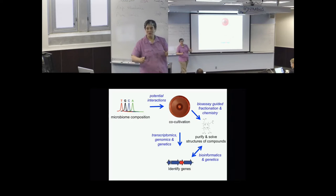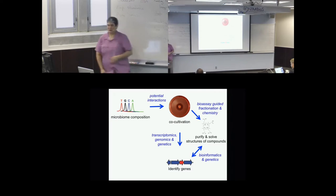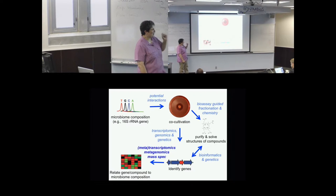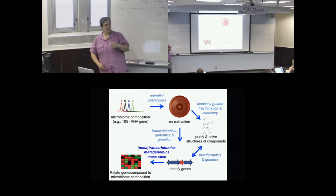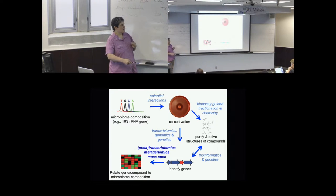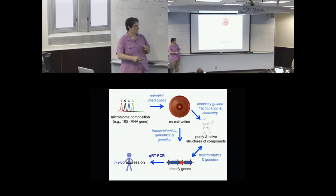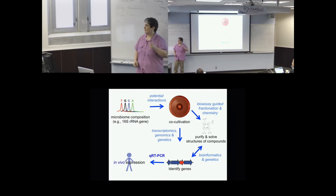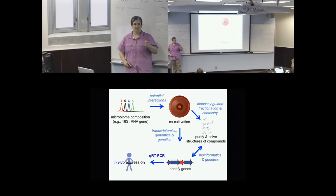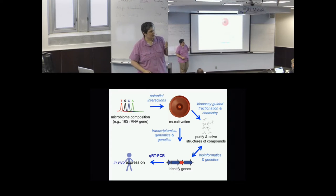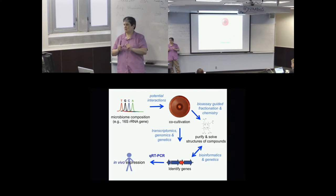The goal is to get at genes that are involved in this interaction. We also do what I would consider some very basic chemistry. We do very basic extraction protocols that then allow us to collaborate with mass spectrometrists and natural products chemists to go after the compounds that are involved in interactions. Again, our goal is to get into genes. In the long run, we're going to use metatranscriptomics, metagenomics, and mass spec from samples directly from the natural environment to figure out the relationship between these genes or the compounds they produce and the composition of the microbial community.